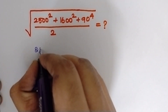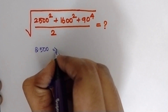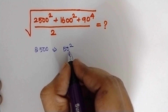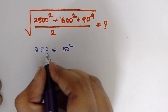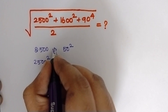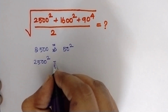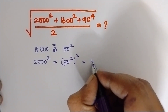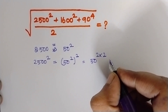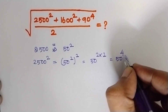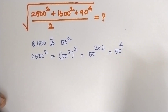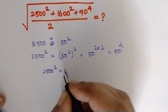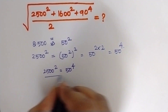First, take 2500. 2500 is equal to 50 squared. So 2500 the whole square can be written as 50 squared, the whole square, which gives us 50 to the power 2 times 2, which is equal to 50 to the power 4. So we found that 2500 the whole square is equal to 50 to the power 4.